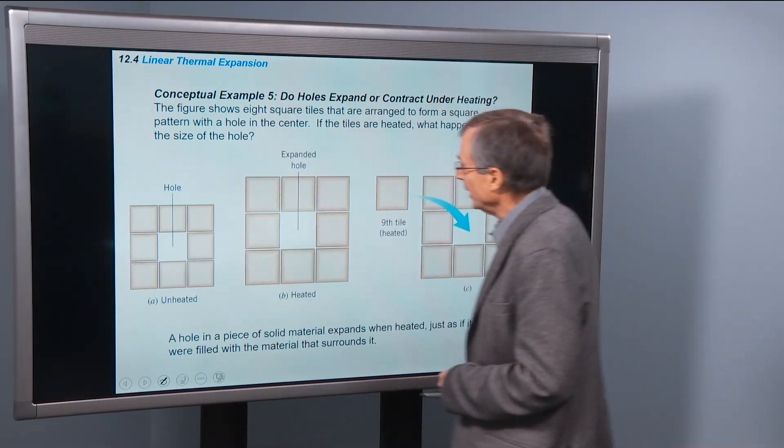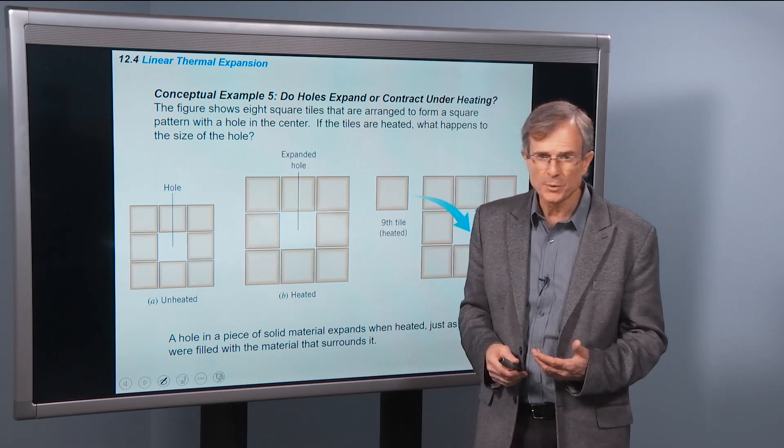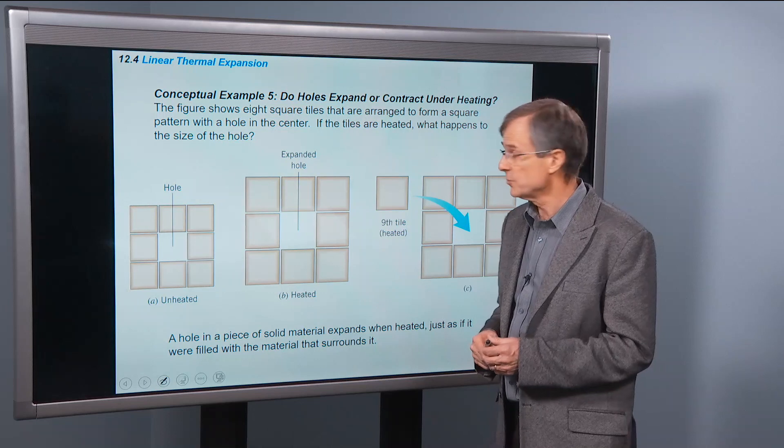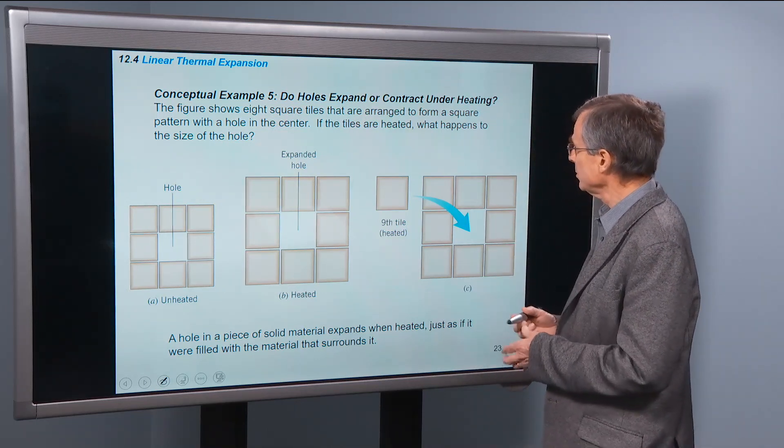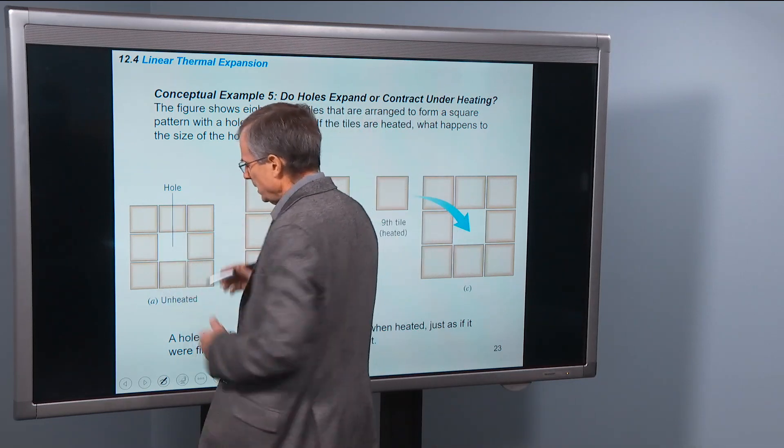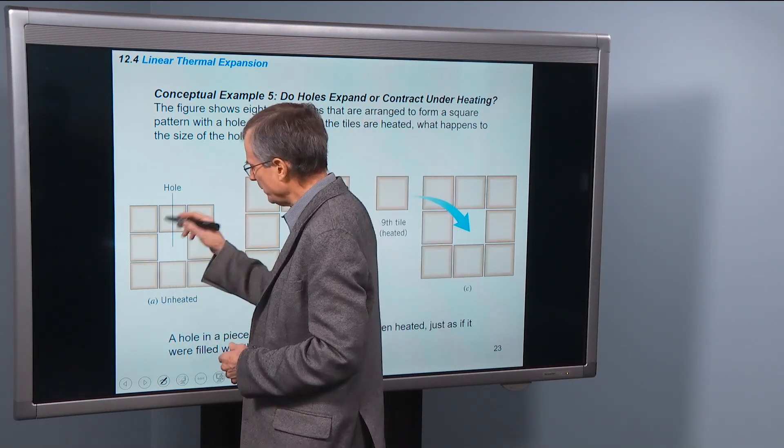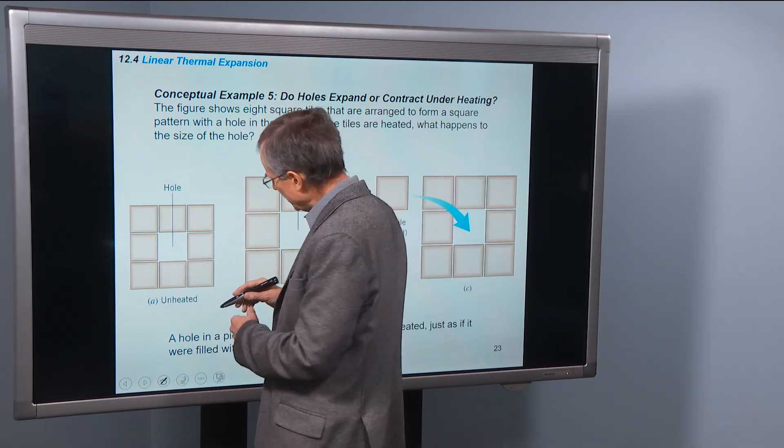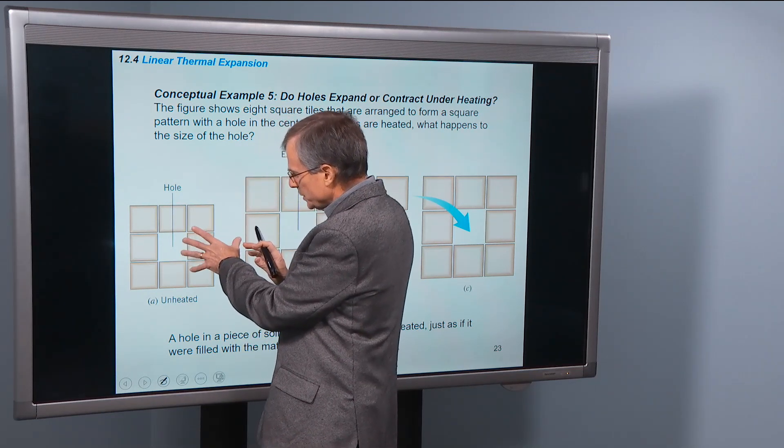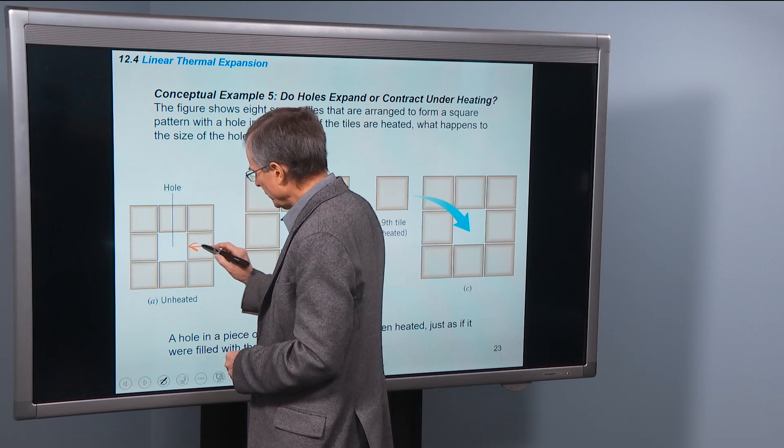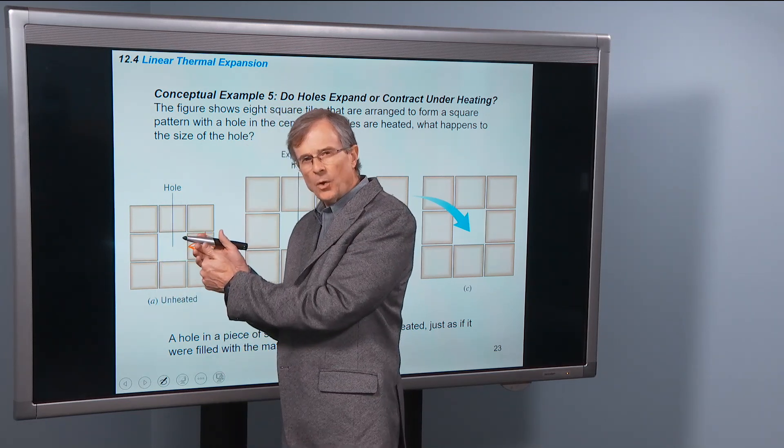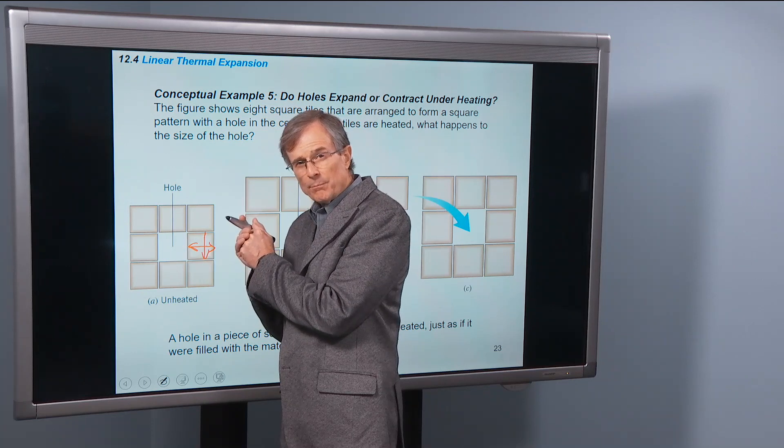This is a fun little example, a great conceptual example. One example of how well this book is written. Do holes expand or contract under heating? So if you heat this piece of metal that has a hole in it, you'd think that these guys, each of these is going to expand. This will expand both this way and this way, and that should fill in the hole, shouldn't it? But you'd think wrong.